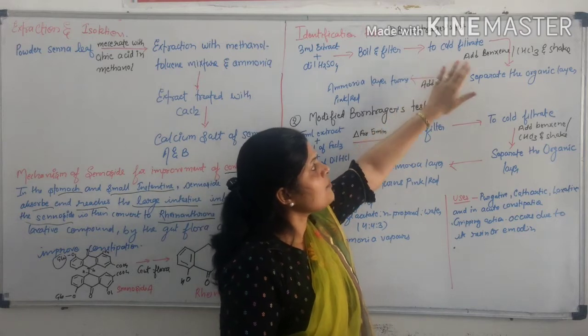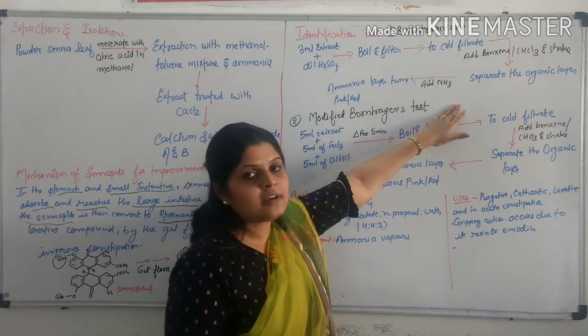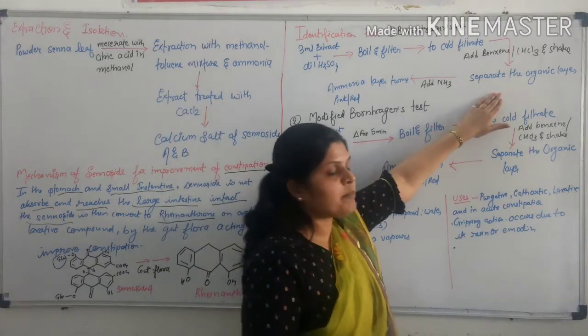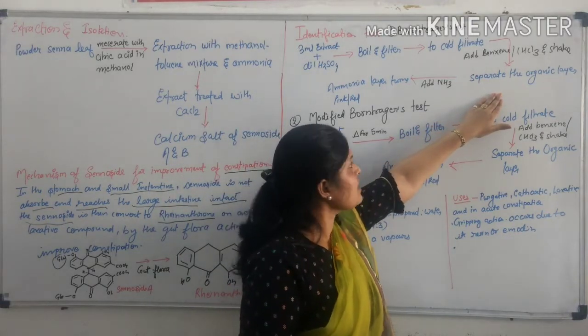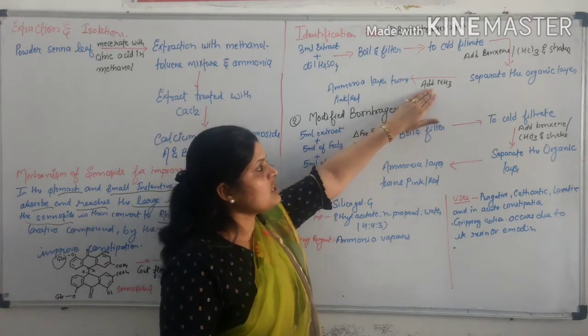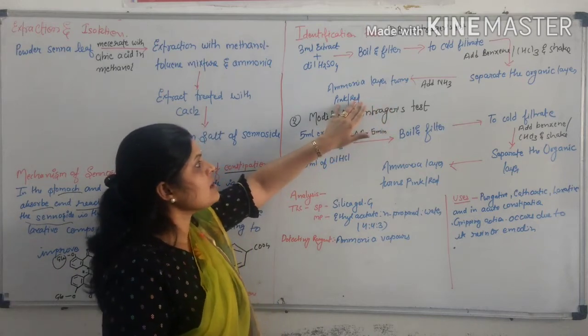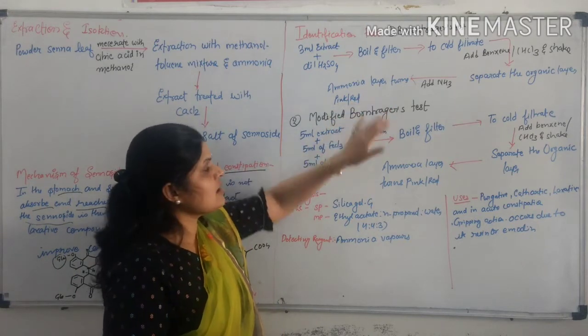Then, it is shaken. Separate the organic layer. Add ammonia solution slowly. Then, ammonia layer turns pink and red color.